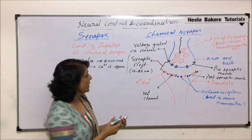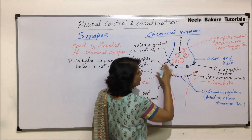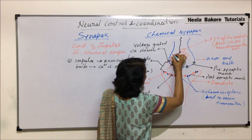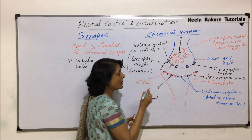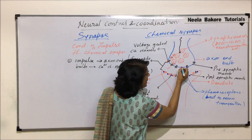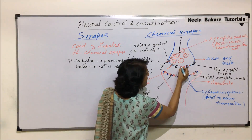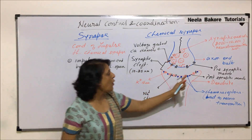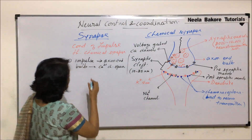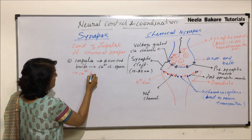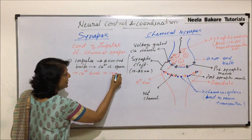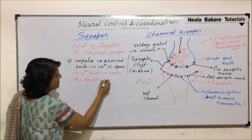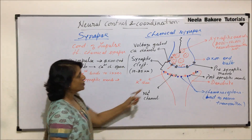After the impulse reaches the axon end bulb, due to that voltage or potential, calcium channels open. When the calcium channels open, the calcium ions which are in the medium move in. These calcium ions go and bind on the inner side of the pre-synaptic membrane.